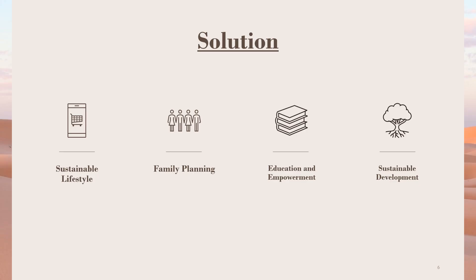Now let's go to the solution. The first and foremost, most important solution is family planning. If we provide family planning and education, this is an effective way to address the overpopulation situation. If we provide individuals and couples the tools to plan their family and space their pregnancy, this will result in a reduction of unintended pregnancies which will promote sustainable growth. There are different types of family planning such as hormonal contraceptives, barrier methods, and long-acting reversible methods such as intrauterine devices and implants.